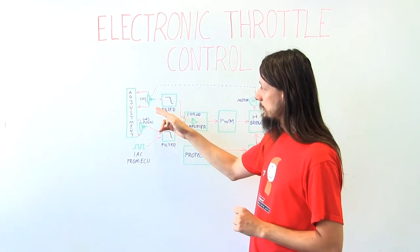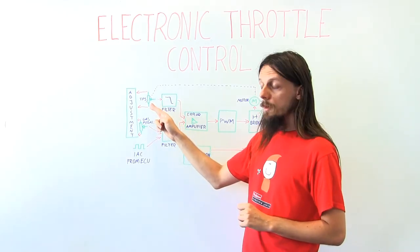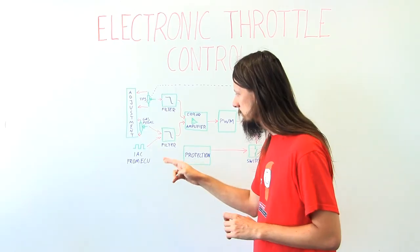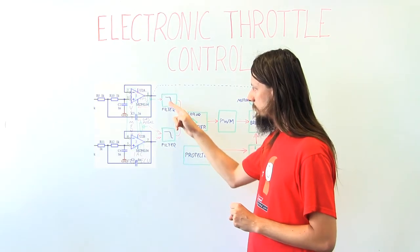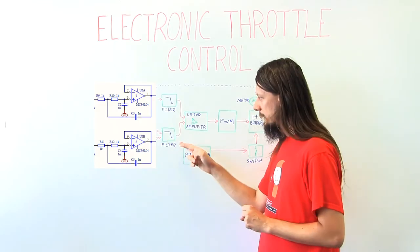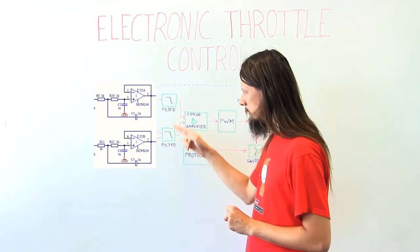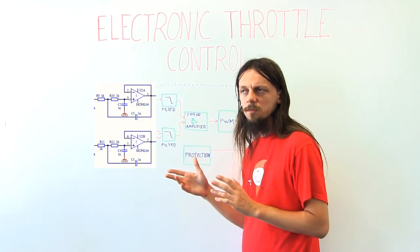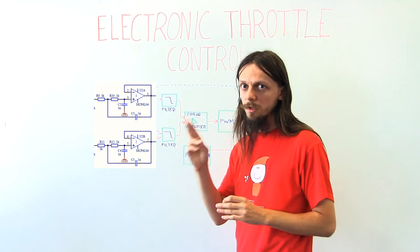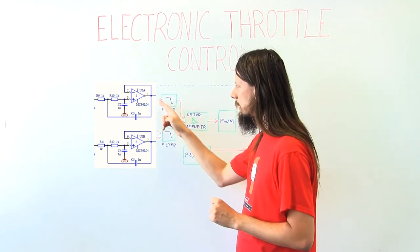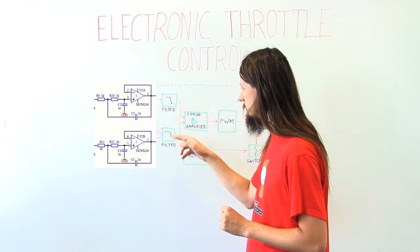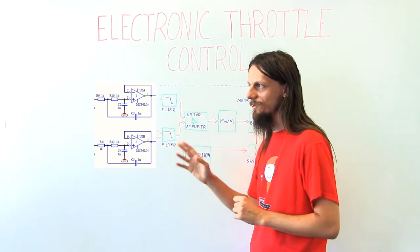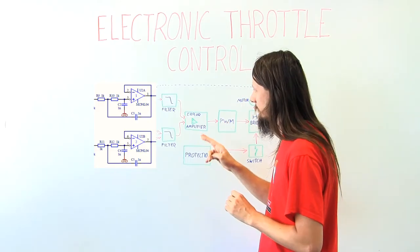Both of those signals, the signal from the throttle position sensor and the gas pedal or this additional input, those signals will be filtered by a low-pass filter. This is needed for getting rid of noise that will be induced on the lines connecting all this stuff. Believe me, without that it won't work at all. It will be crap.